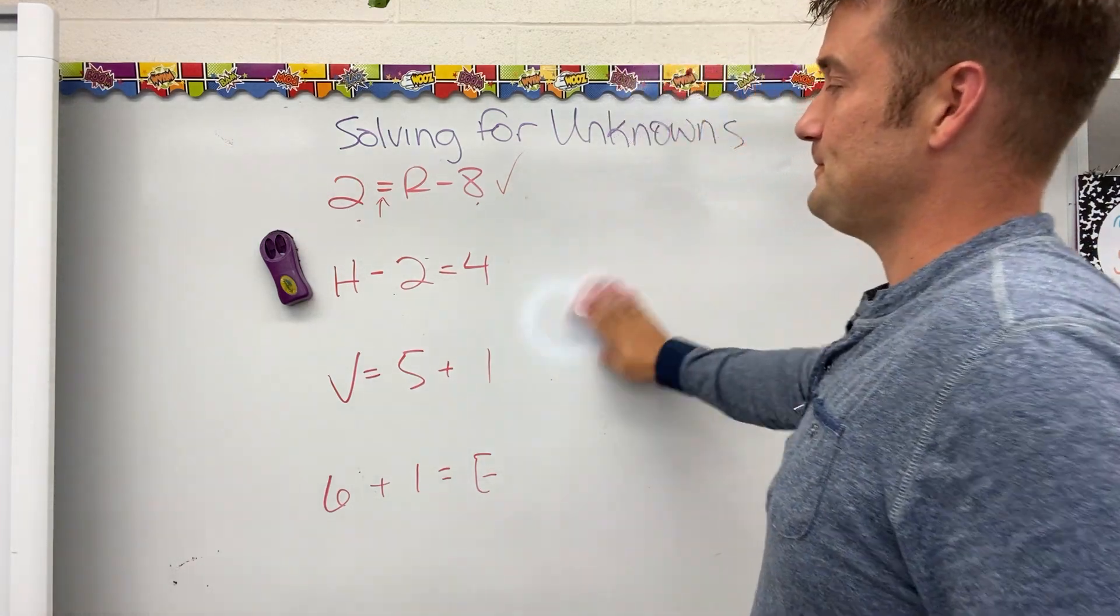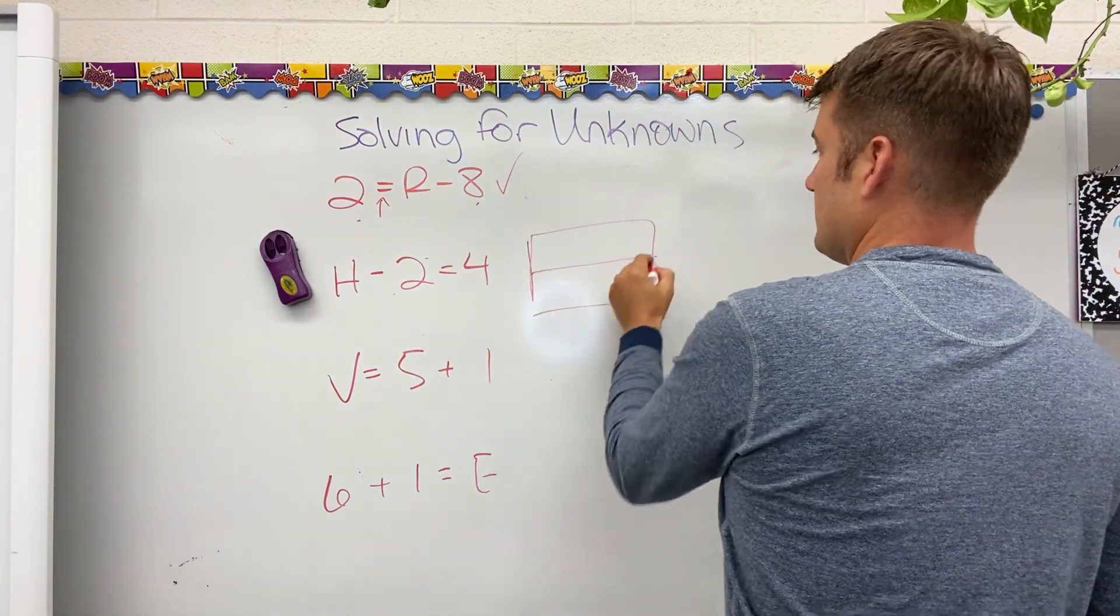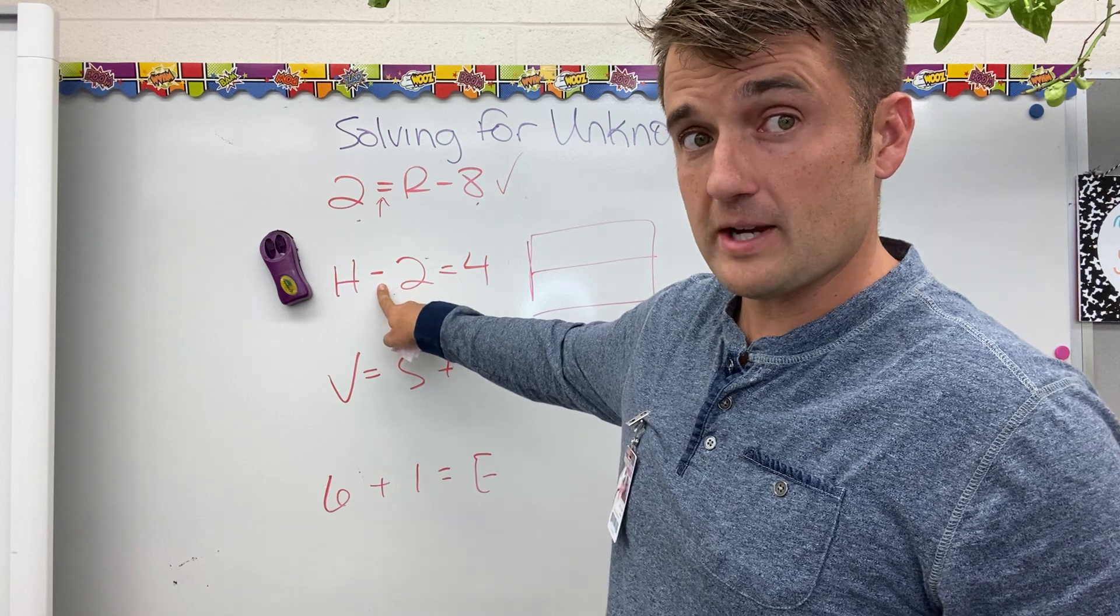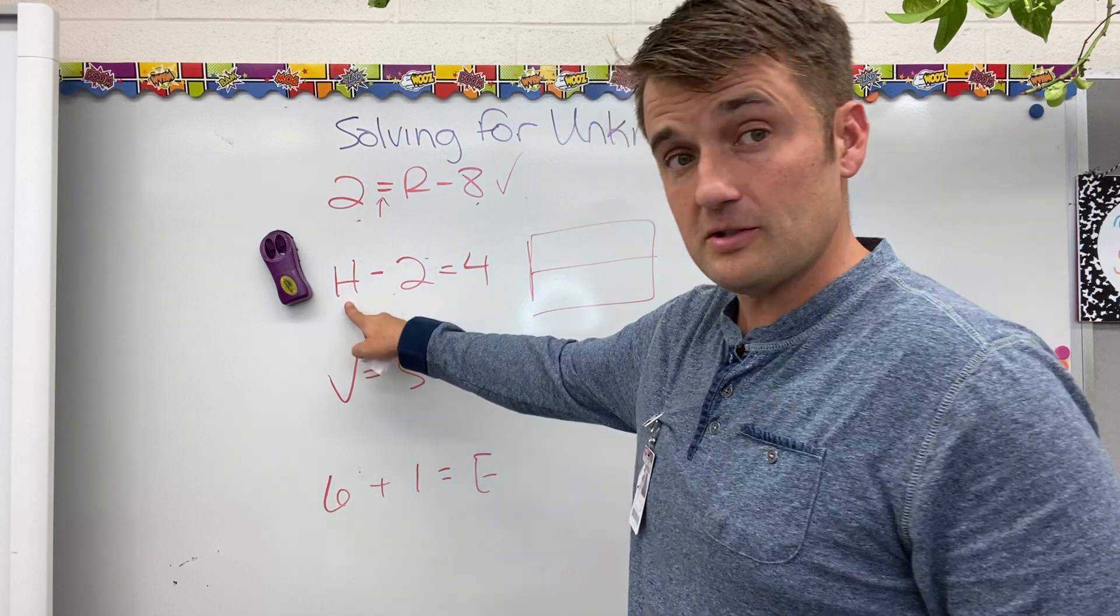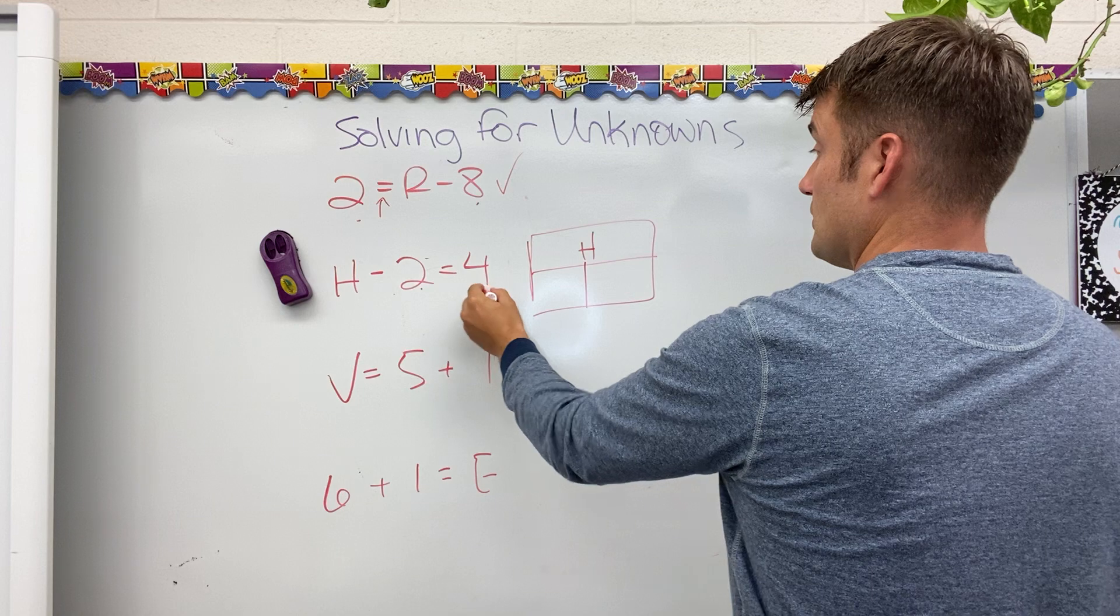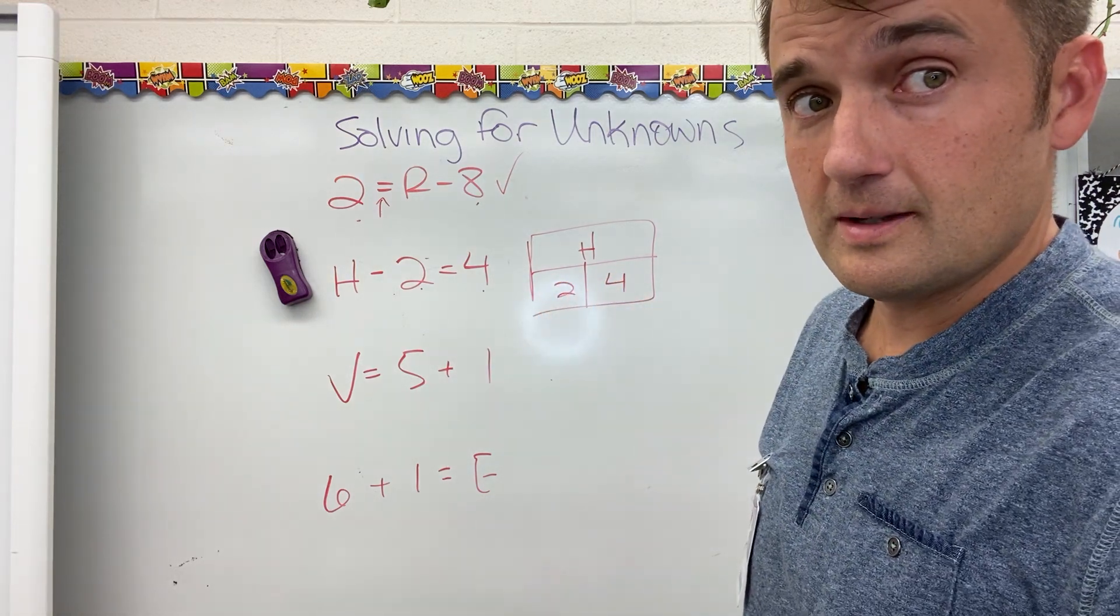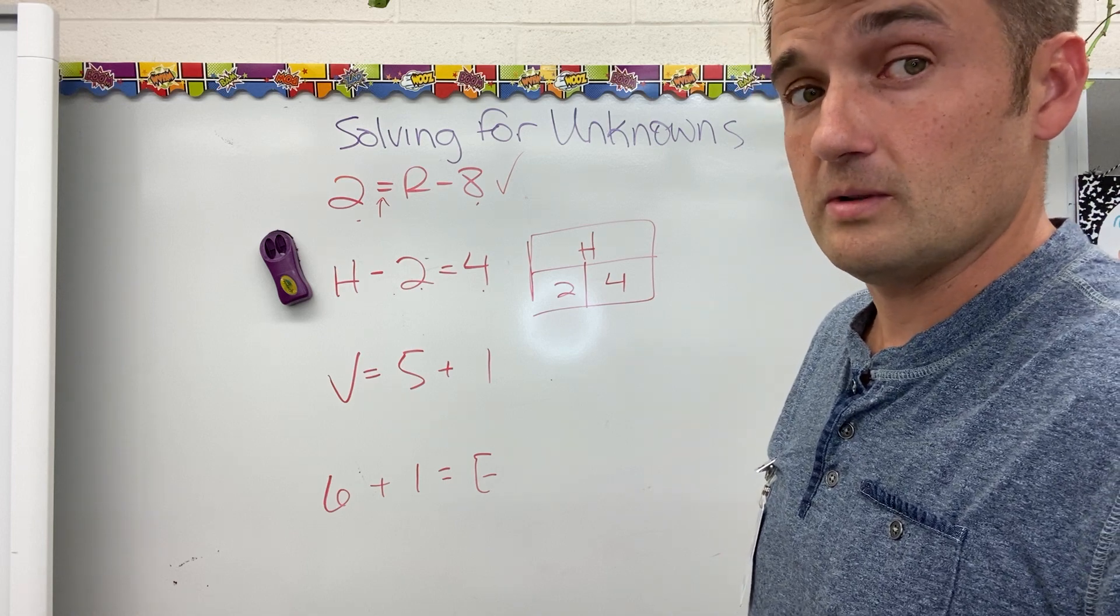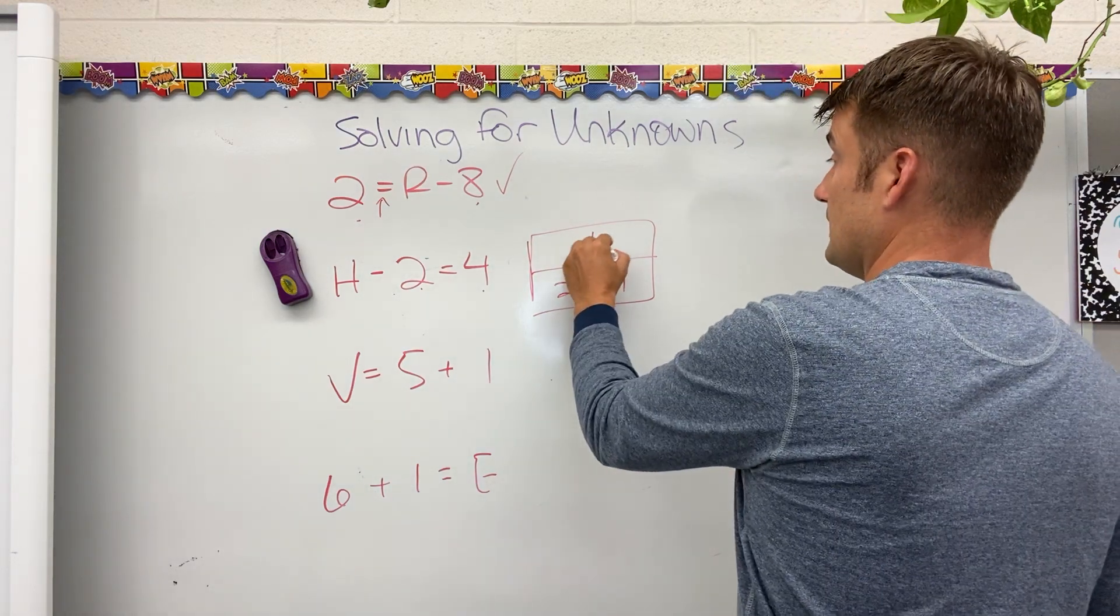So, parts in a whole. Subtraction equation. Subtraction starts with the big number. I'm subtracting from h. h must be the big number. My parts are 2 and 4. If my parts are 2 and 4, it's not hard to figure out that my whole, my total, must have to be 2 plus 4 is 6. h equals 6.